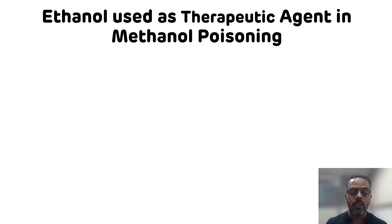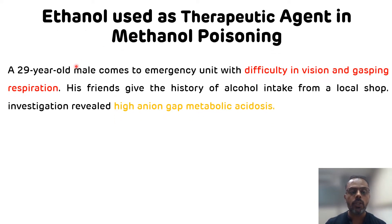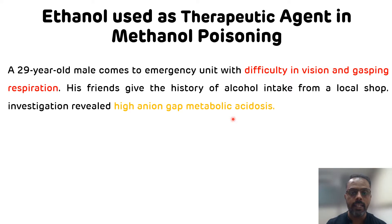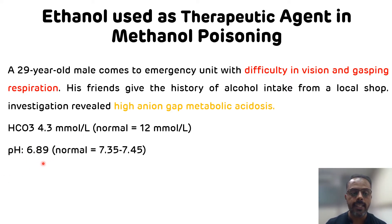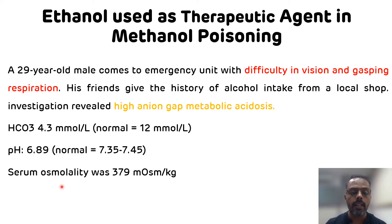So let's start. The case description is: a 29-year-old male comes to the emergency unit with difficulty in vision and gasping respiration. His friends give the history of alcohol intake from a local shop. Investigations revealed high anion gap metabolic acidosis. Bicarbonate level was 4.3 mmol per litre (reduced), pH was also reduced at 6.89, and serum osmolality was 379 mOsmol per kg.